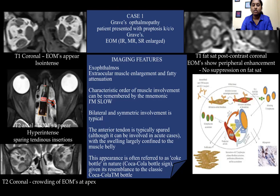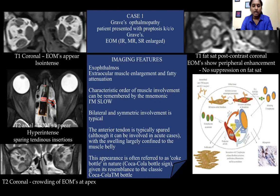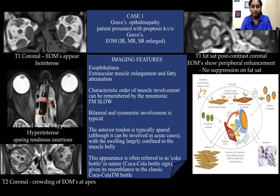In general, the imaging features for Graves ophthalmopathy are exophthalmos, extraocular muscle enlargement, and fatty attenuation within the orbit. The characteristic order of muscle involvement can be remembered by the mnemonic 'I'M SLO,' involving firstly the inferior rectus, medial rectus, and superior rectus muscles in that order. Involvement is usually bilateral and symmetrical. The anterior tendon is typically spared, although it can be involved in acute cases, with the swelling largely confined to the muscle belly, giving a characteristic fusiform appearance.